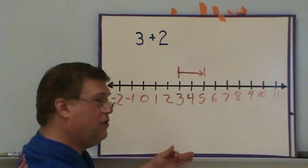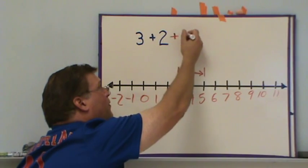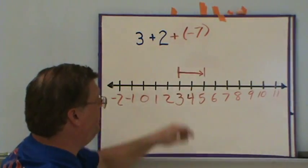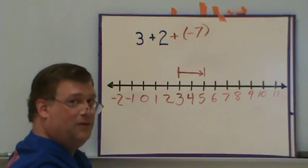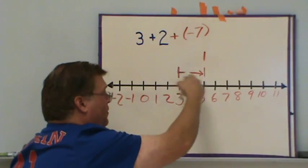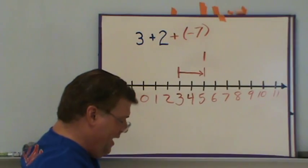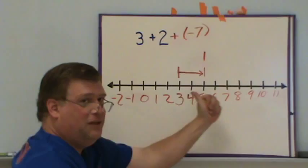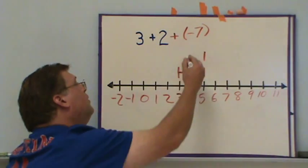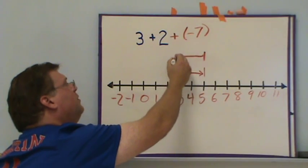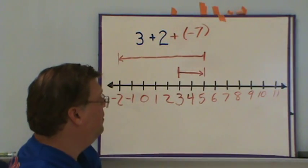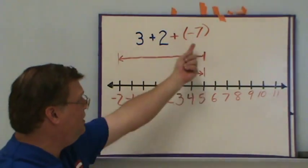Now let's extend this to include something like plus a negative seven. Adding negative seven is the second step — we start at five, where we left off. Adding a negative actually goes to the left because adding a negative is the same as subtracting the positive. So from five we go left seven steps, ending there. The two arrow lines together represent this full problem on the number line.